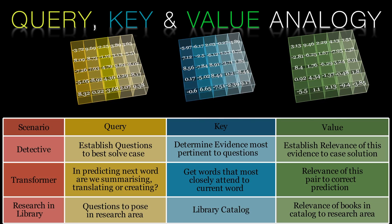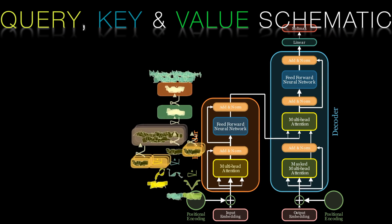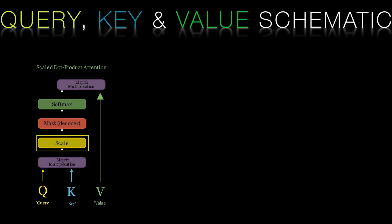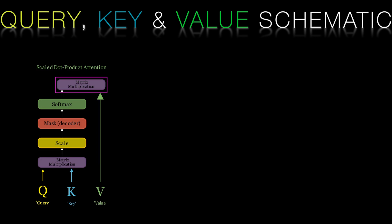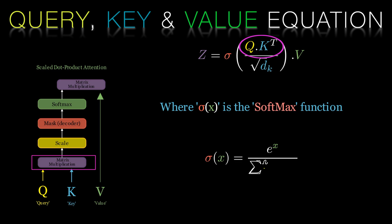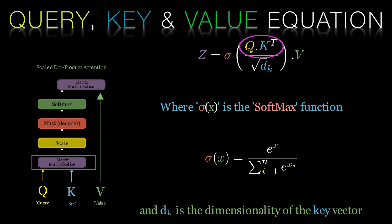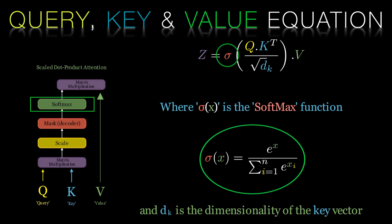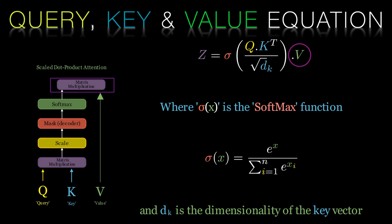Looking at the schematic, we first multiply the Q and K matrices together, then scale them. We pass them through a mask — which will be discussed in detail in the next video — then normalize the results and finally multiply by the V matrix. Formally: we multiply the query matrix with the transpose of the key matrix to get an unscaled attention score, then scale by dividing by the square root of the dimensionality of the key matrix (a standard value is 64, meaning we divide by 8). We further normalize using a softmax function that ensures all attention score weights sum to 1, and finally multiply these scaled, normalized scores by the value matrix.